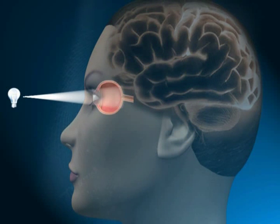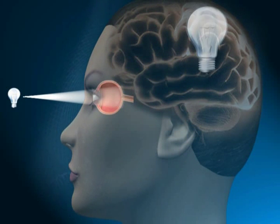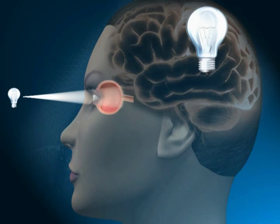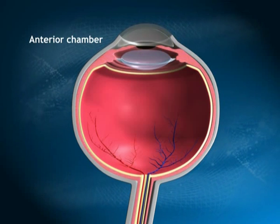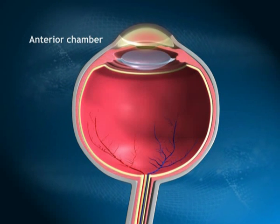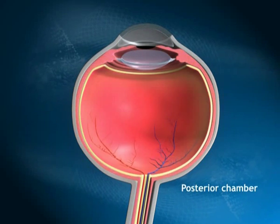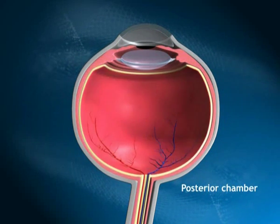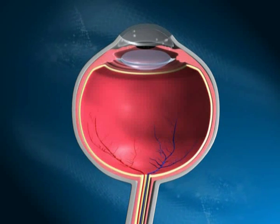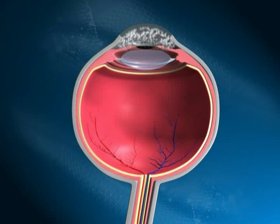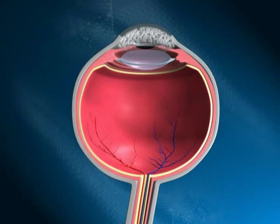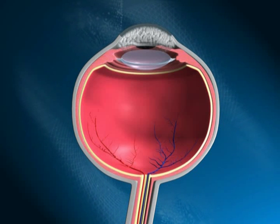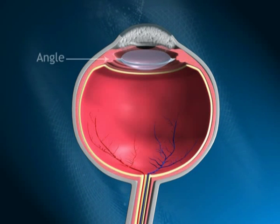The brain translates these signals into the images that we see. The eye has a front or anterior chamber and a back or posterior chamber. A clear fluid called aqueous humor collects in the anterior chamber of your eye.